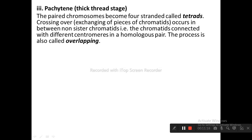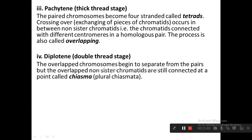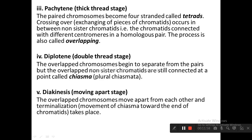Pachytene, also known as the thick thread stage: the paired chromosomes become four strands each, called tetrads. Crossing over — exchange of pieces of chromatids — occurs between two non-sister chromatids connected to different centromeres in a homologous pair. Diplotene, also known as the double thread stage: the overlapped chromosomes begin to separate from their pairs, but the overlapping non-sister chromatids are still connected at a point called chiasma (plural: chiasmata). Diakinesis, also known as the moving apart stage: the overlapped chromosomes move apart and terminalization — movement of chiasmata towards the ends of chromatids — takes place.